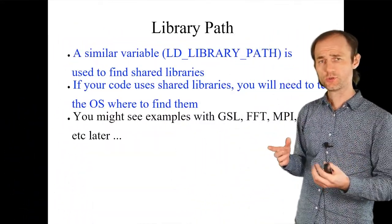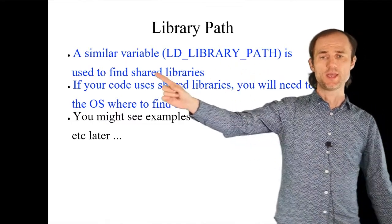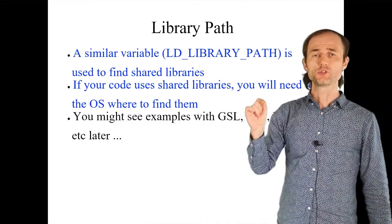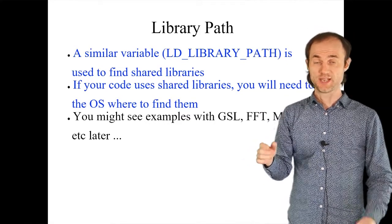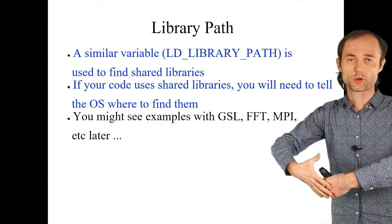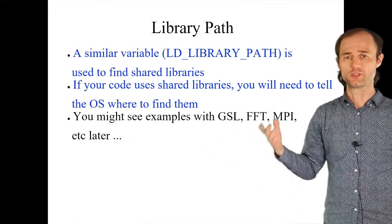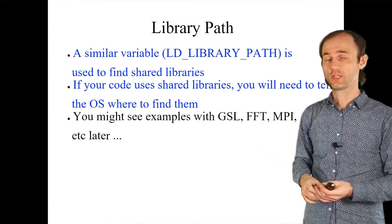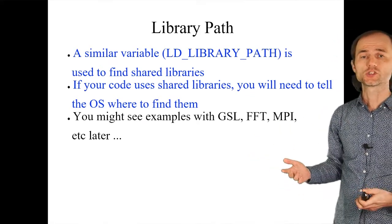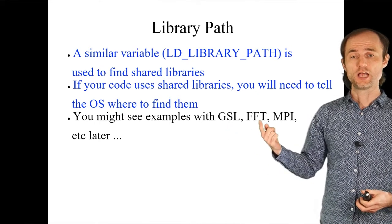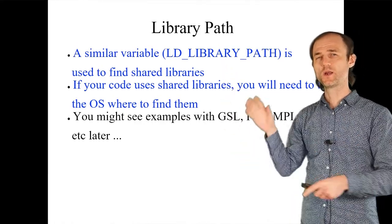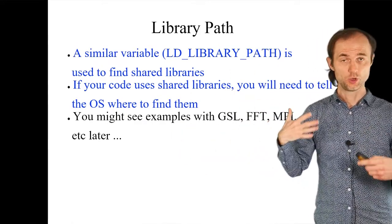There is also LD_LIBRARY_PATH — a path used to find not executables but libraries. Libraries are compiled code available on demand that you absorb into your program. There are libraries for special functions, math — like GSL, FFT, MPI, and so on. You use LD_LIBRARY_PATH to tell the system where to look for those libraries.